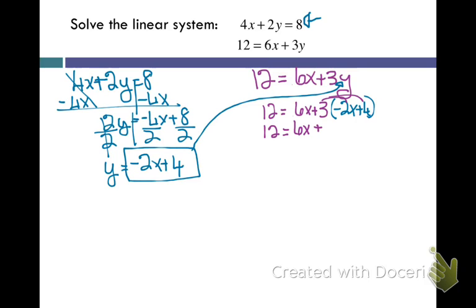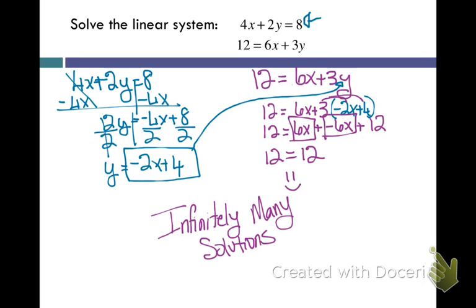Plus 3 times negative 2x is negative 6x, plus 3 times 4 is 12. Now I'm going to combine like terms. 6x plus negative 6x is 0, so those drop out, go away. I'm not going to write down 0, and I get 12 equals 12, which is a true statement. So therefore there are infinitely many solutions to this system.